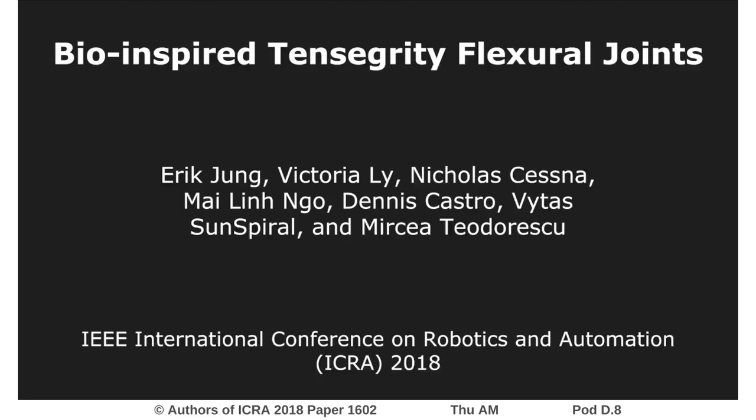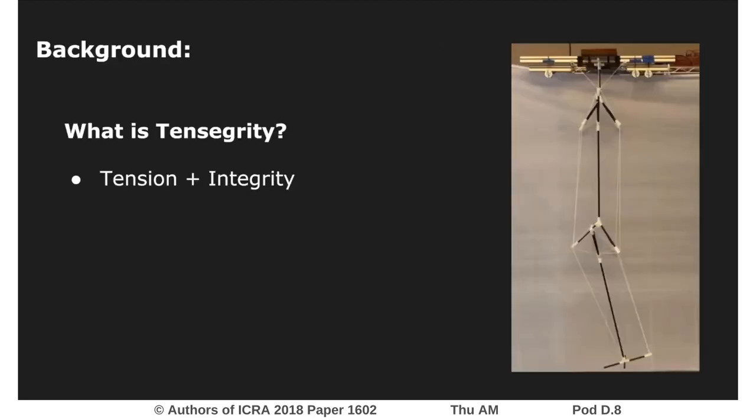Bio-inspired tensegrity flexural joints is an innovative step towards imitating human gait through robotics. The robots we designed consist of structurally compliant networks with relatively stiff compression elements suspended in a mesh of flexible tension elements. These systems that contain tension with integrity are commonly known as tensegrity.